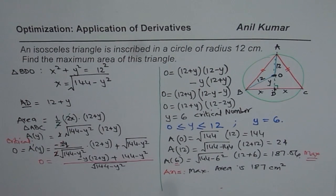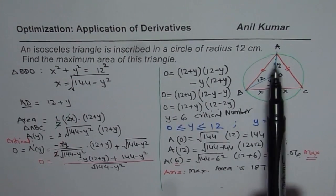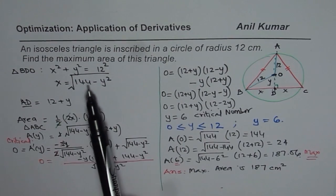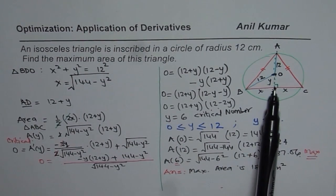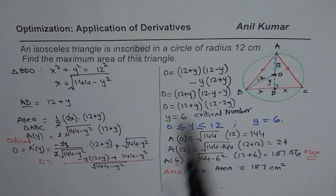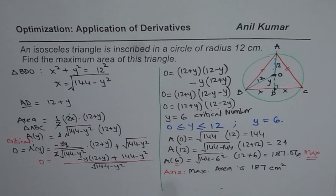So the steps are: first, sketch to represent the situation. Define your variables. Relate the variables — we used the Pythagorean theorem in the right angle triangle to get the relation between X and Y. Then write the expression for the area. Find the derivative, critical number, boundary conditions, and then get your answer. These are the steps to solve any optimization question. Thank you and all the best.